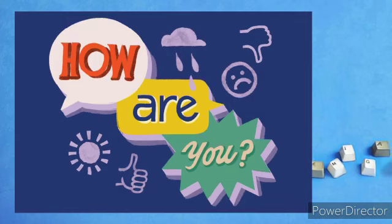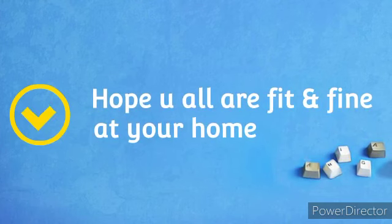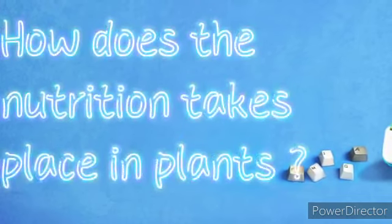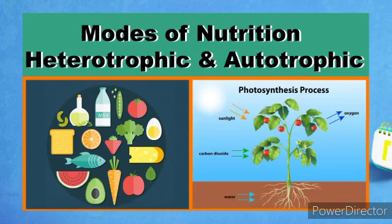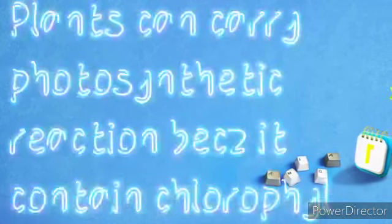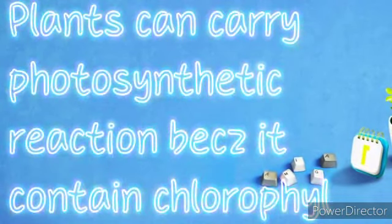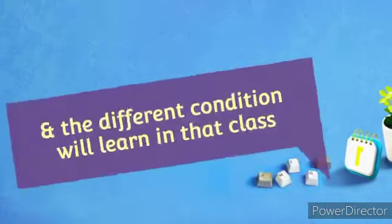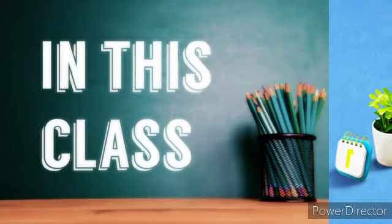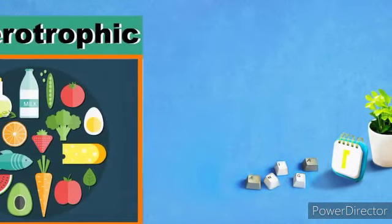Good morning students, hope you all are fit and fine. In the previous class we learned about nutrition — how nutrition takes place in plants. We learned there are two modes of nutrition, and we covered autotrophic nutrition: plants carry out photosynthesis because they contain chlorophyll. Now in this class we will learn the other mode of nutrition — heterotrophic nutrition.